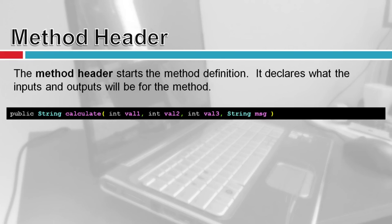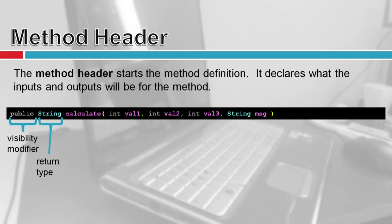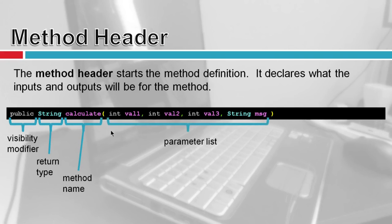Now let's go into the actual pieces of a method. The method header starts the method definition — it declares what the inputs and outputs will be. First is the visibility modifier, telling you whether someone using your class can call this function or whether it's private. The return type is the value returned back — if the function doesn't return anything, this is void; otherwise it's a primitive or an object. There's only one output for every function. Then there's the method name, like calculate, and finally the parameter list — what goes into the function.